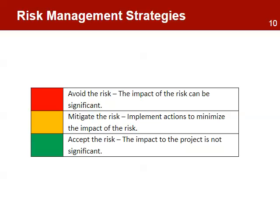Risk mitigation strategies are actions the project will take to reduce the impact of the risk event on the project. There are basically three types of actions available: avoid the risk, which is to adjust the project plans to eliminate or reduce the risk; mitigate the risk, which is to implement actions to minimize the impact of the risk; and accept the risk, which is to make a deliberate decision to accept the risk without engaging in special efforts to control it.